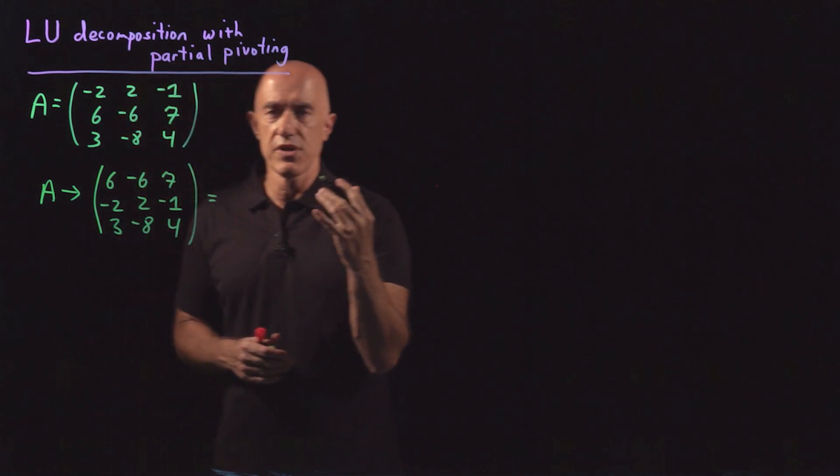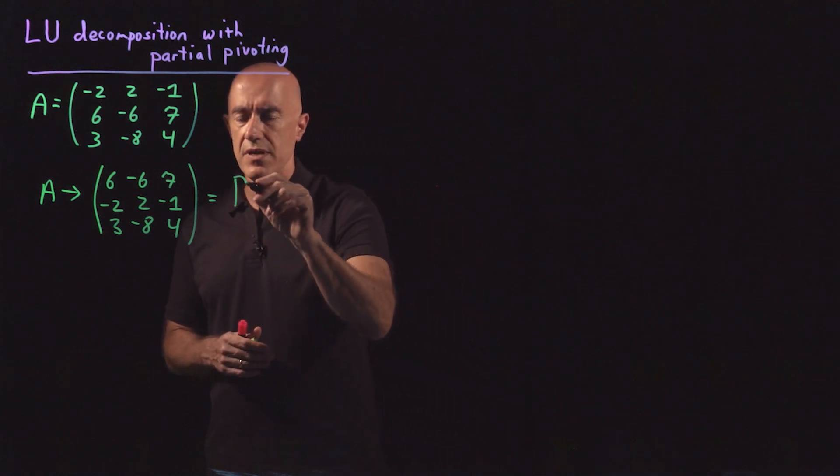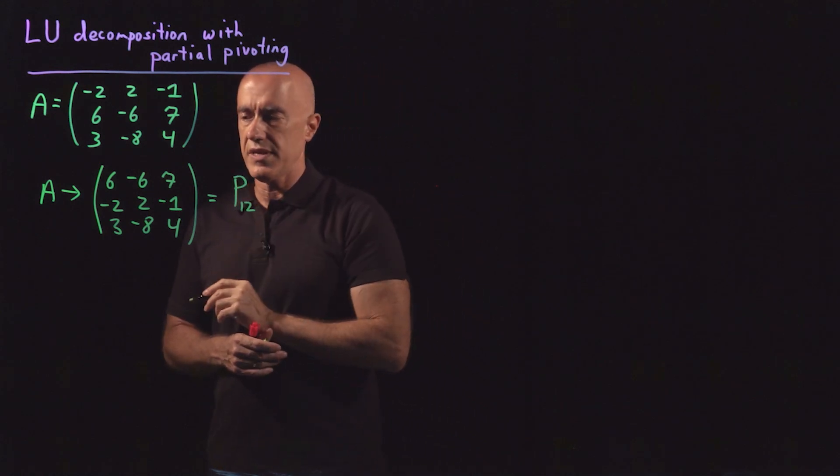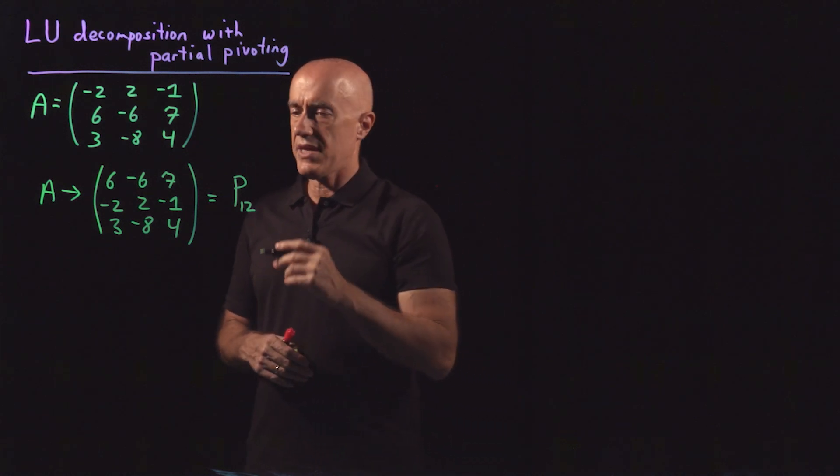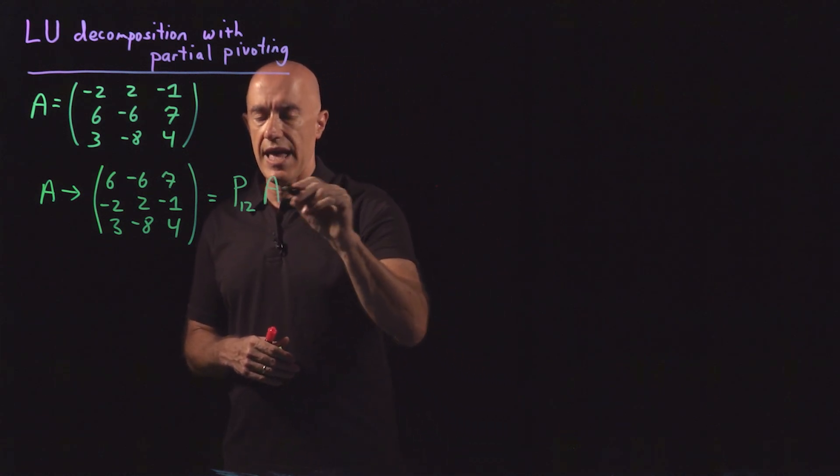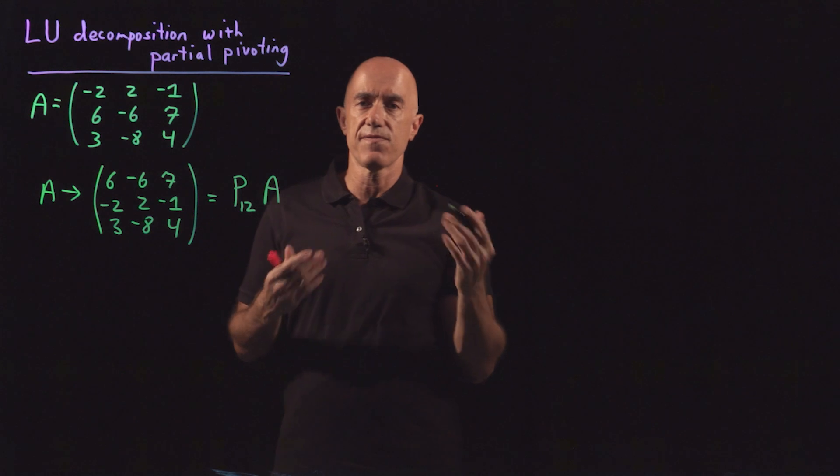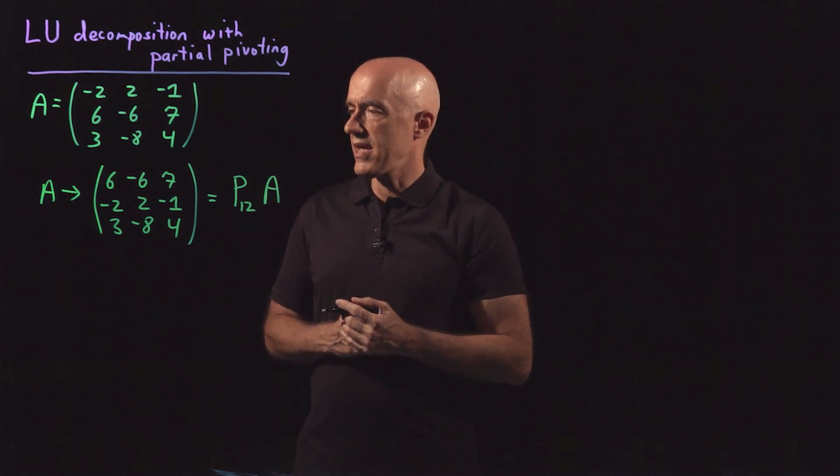So we use this permutation matrix. So we swap the first row with the second row. So I'll denote that as P12, permutation matrix, times A. So that's the first step, the pivoting step.